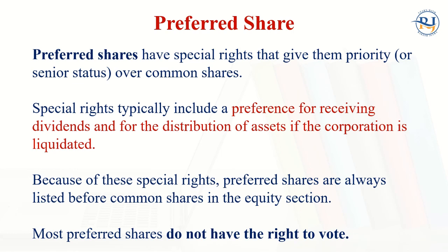Preferred shares have specific special rights that give them priority or senior status over common shares. Special rights typically include a preference for receiving dividends and for the distribution of assets if the corporation is liquidated. Because of these special rights, preferred shares are always listed before common shares in the equity section — you will see the preferred share first, then the common share on the second line.